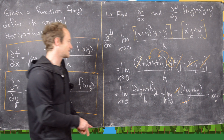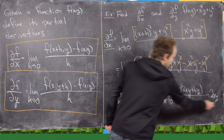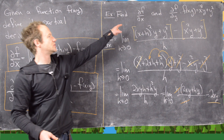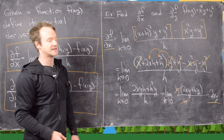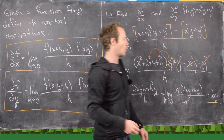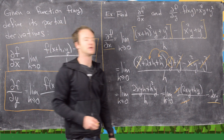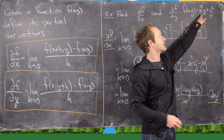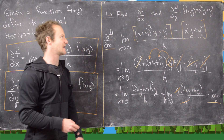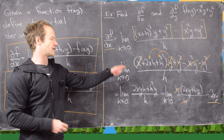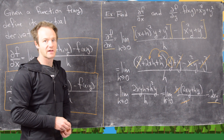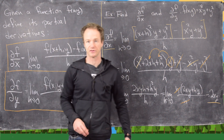Now let's look at this partial derivative with respect to what our function was. Notice essentially what happened is we treated x as a variable and y as a constant. The derivative of the first term x squared y is 2xy, and the derivative of y squared is 0. So that's why we get 2xy for this partial derivative.